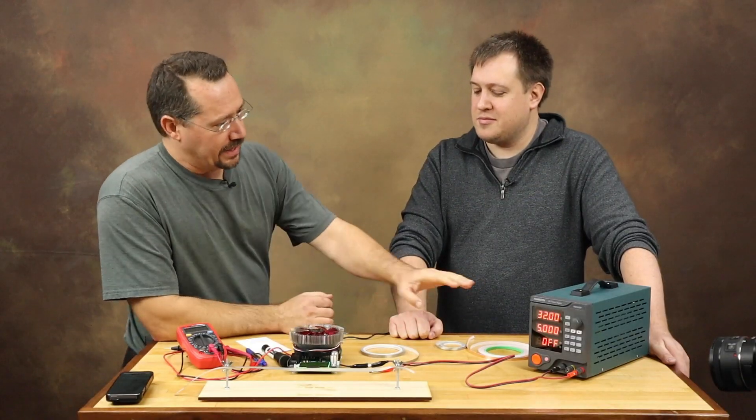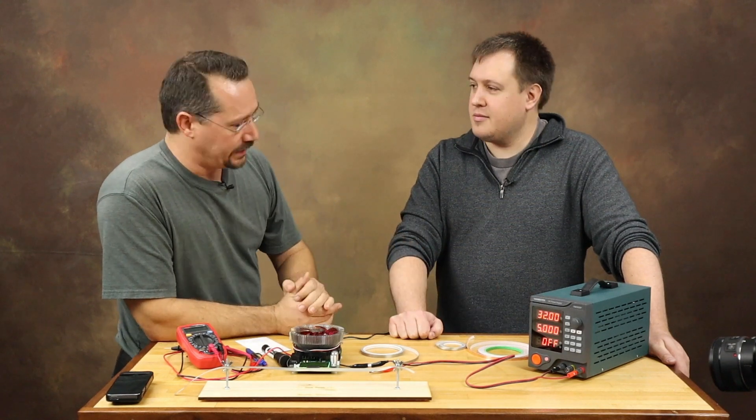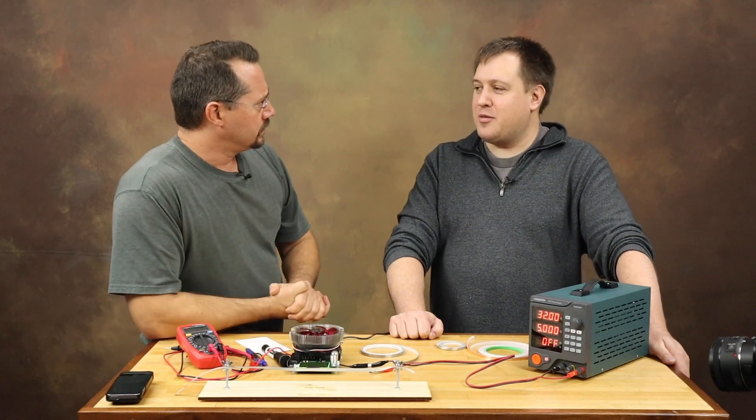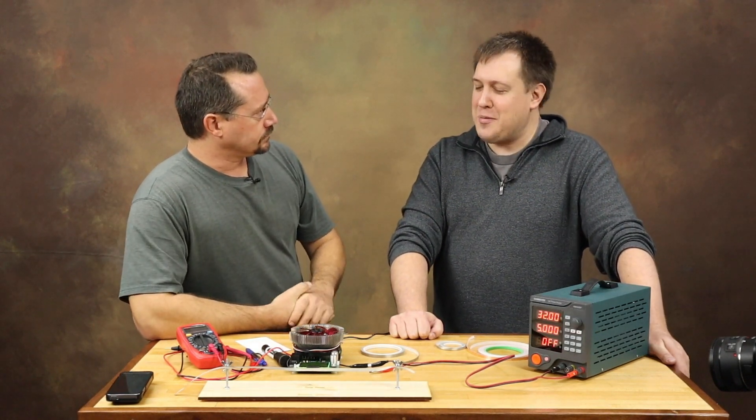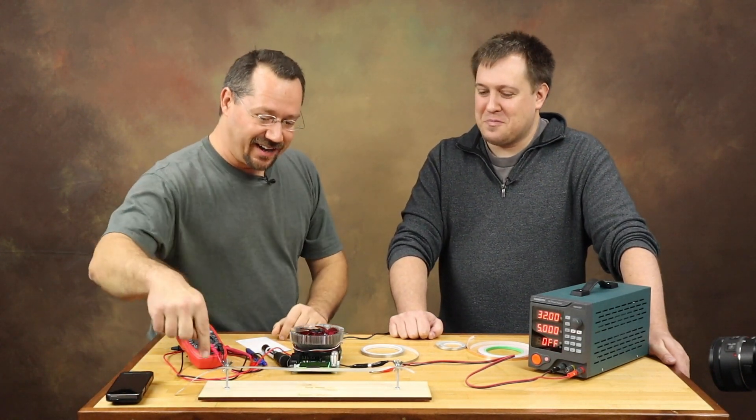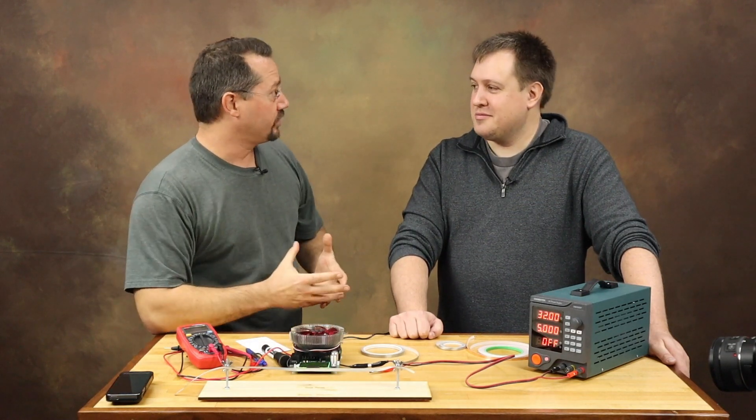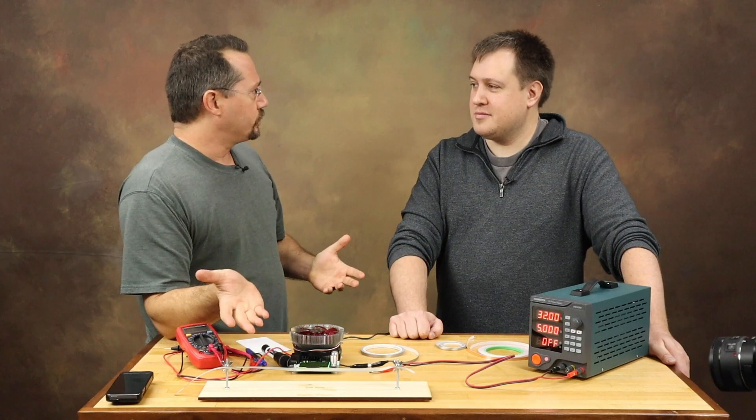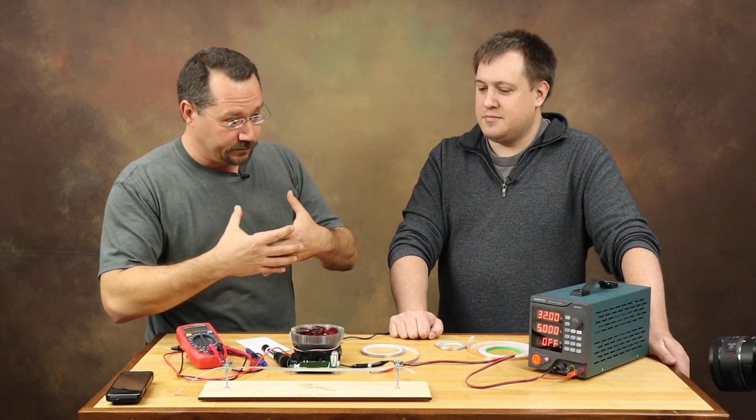So essentially we'll have our power coming from the power supply here. We'll be putting a steady current, we're going to go up to what, five amps? Max of five amps off this thing though I don't know if the tape can handle that much. So the tape itself right here will be part of the circuit and it's literally going to be the weak link, it's going to be kind of like a fuse basically. At a certain amount of current it's going to fail, it's going to stop working.